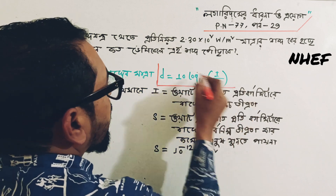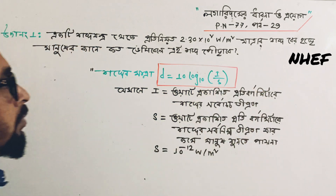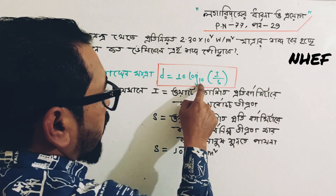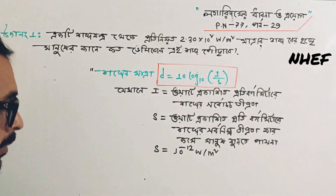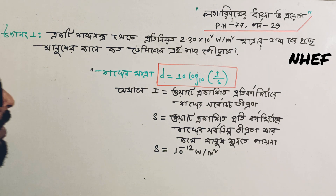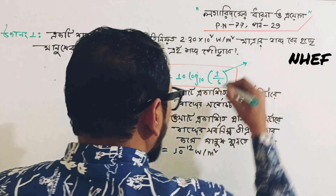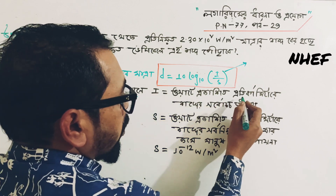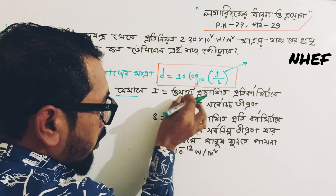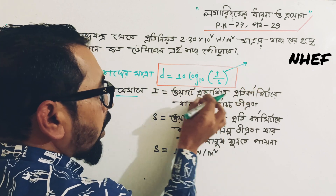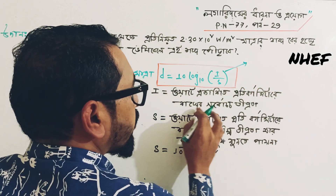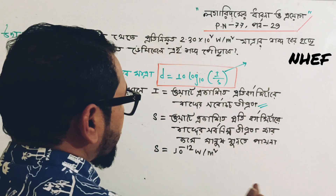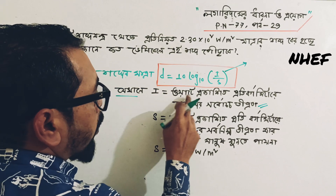D is equal to 10 log. Now, I is equal to the time I see — I equals the time I, please. I is equal to vart e.